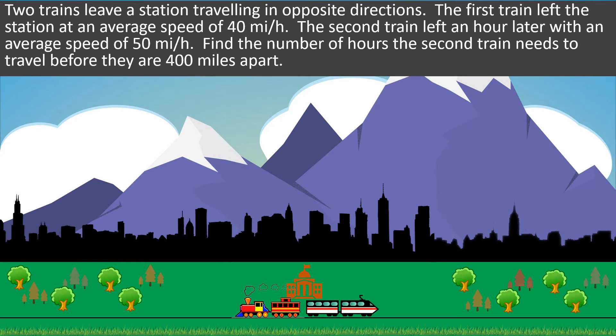Welcome back to another question on distance rate time. This question states two trains leave a station traveling in opposite directions. The first train left the station at an average speed of 40 miles per hour. The second train left an hour later with an average speed of 50 miles per hour. Find the number of hours the second train needs to travel before they are 400 miles apart.